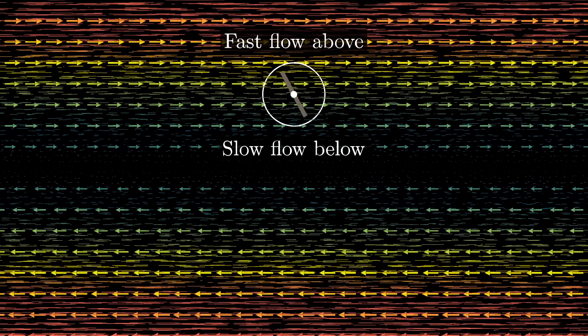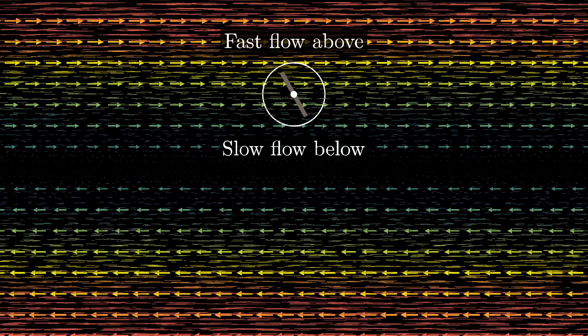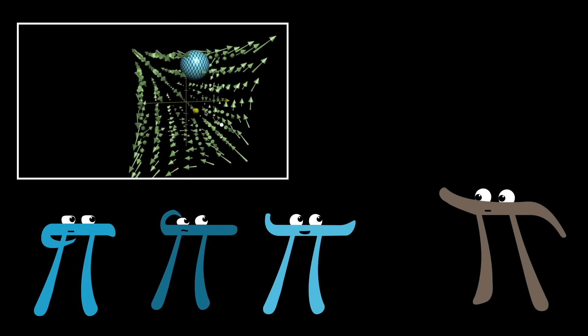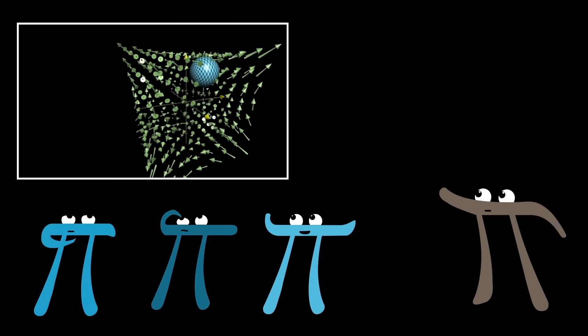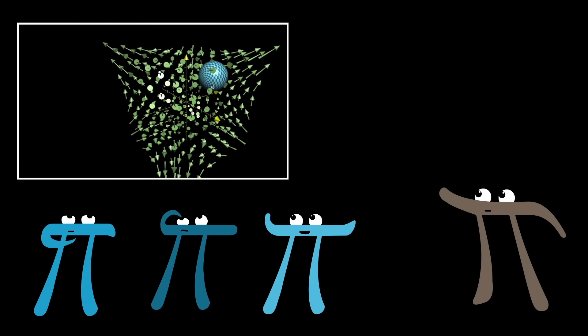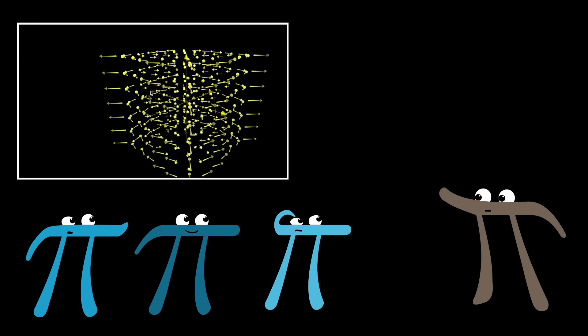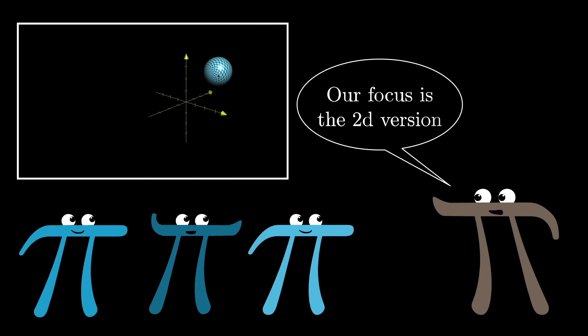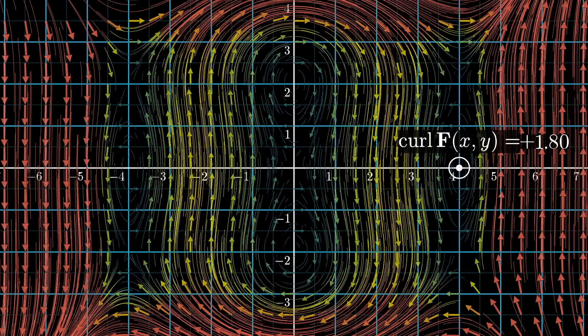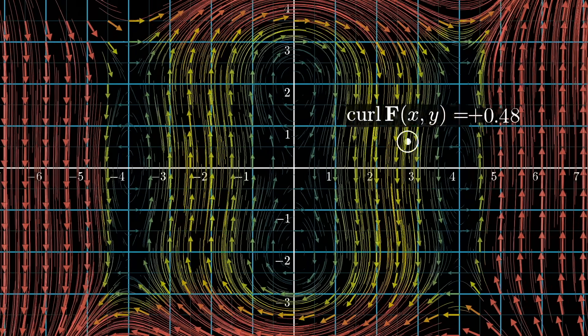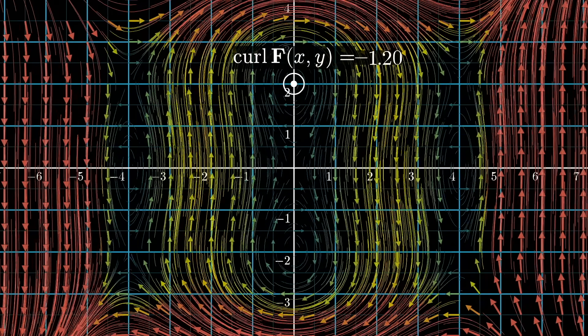And really, true, proper curl is a three-dimensional idea, one where you associate each point in 3D space with a new vector, characterizing the rotation around that point, according to a certain right-hand rule, and I have plenty of content from my time at Khan Academy describing this in more detail if you want, but for our main purpose, I'll just be referring to the two-dimensional variant of curl, which associates each point in 2D space with a single number rather than a new vector.